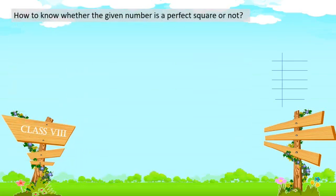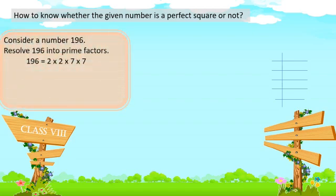Now let's see how to determine whether a given number is a perfect square or not. For this, let's take some examples. Let's consider the number 196. To check whether 196 is a perfect square or not, we will have to do a prime factorization. In prime factorization, we take only prime numbers as factors — 2, 3, 5, 7, 11, 13, and so on.